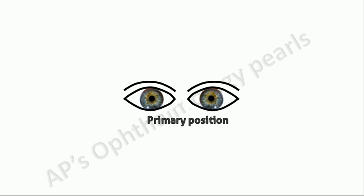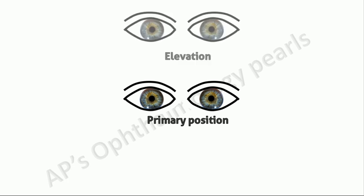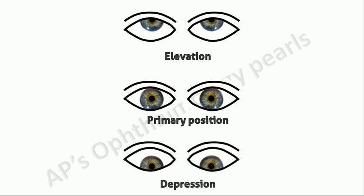There are nine diagnostic positions. The primary position, straight up or elevation, straight down or depression. The primary position is the position of the eyes when fixating straight ahead at any object six meters or more away with a straight head posture.